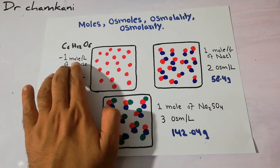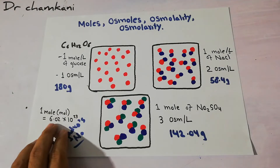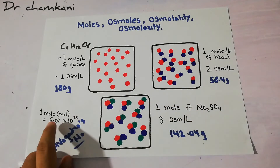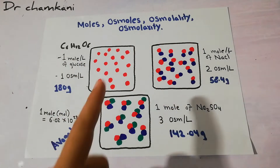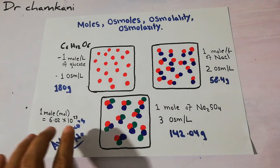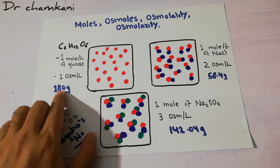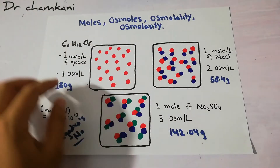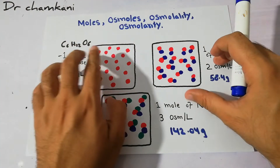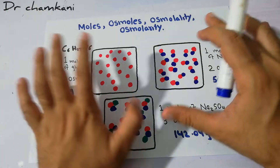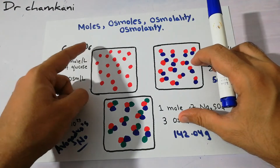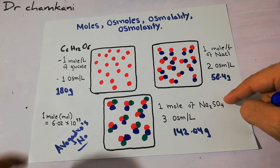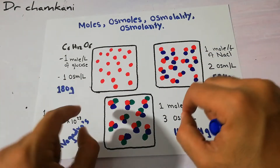In the case of glucose, 180 grams will contain Avogadro's number of particles. In the case of sodium chloride, 58 grams will contain this many particles. In the case of sodium sulfate, 142 grams will contain this many particles — one mole each. All of them contain the same number of particles, but the weight is different, derived from the type and number of elements in that compound. For glucose, it's 6 carbons, 12 hydrogens and 6 oxygens; for sodium sulfate, 2 sodiums, 1 sulfur and 4 oxygens.